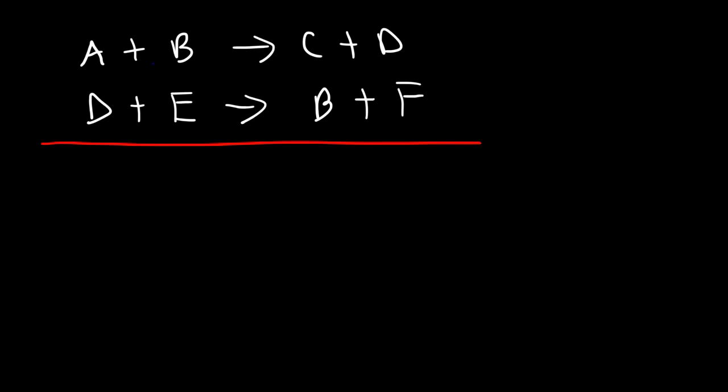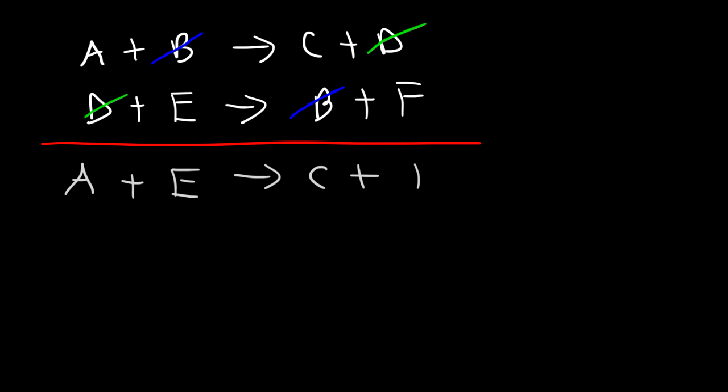Notice that B can be canceled and D can be canceled. So the overall reaction is A plus E, which turns into C plus F. The catalyst appears at the beginning and at the end of the reaction, but it's never consumed — it's never used up.